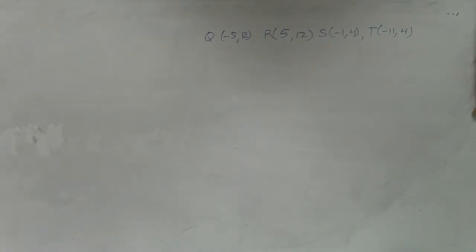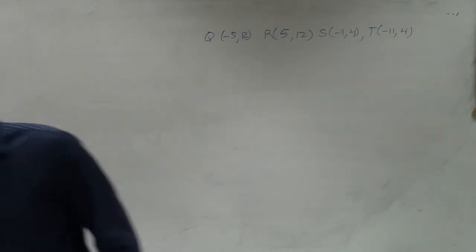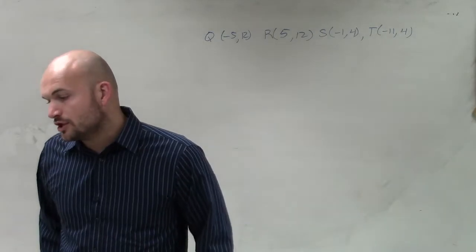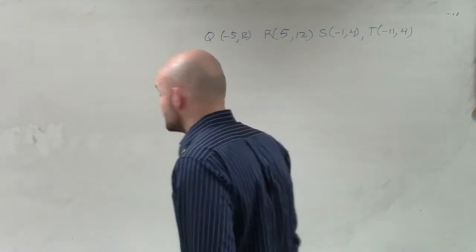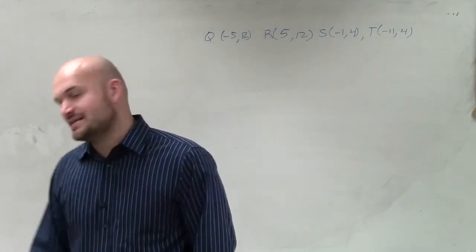In this case, ladies and gentlemen, what they're asking us to do is, given each set of vertices, determine whether the parallelogram QRST is a rhombus, a rectangle, or a square.